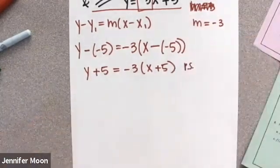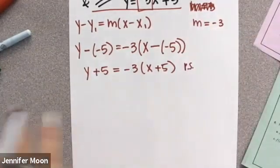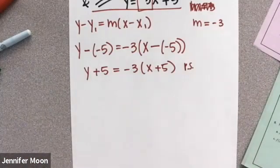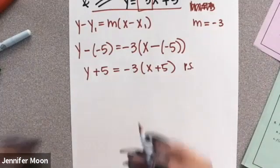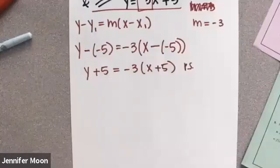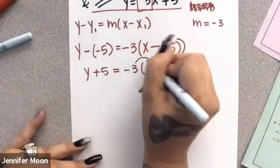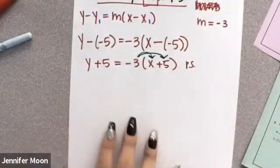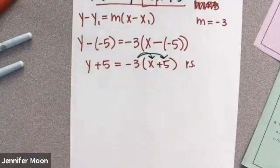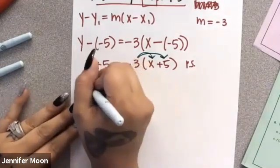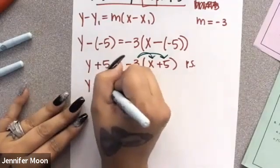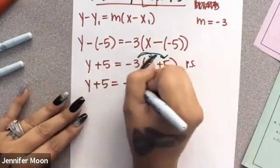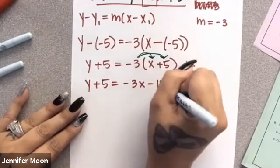So once you get to this point, you use this to solve for your Y equals. That's your slope-intercept form. And again, if you ever have a number touching a parentheses, it's usually going to be the very first thing you do. You've got to multiply that to every single thing inside of that parentheses. You get Y plus 5 equals negative 3X negative 15.